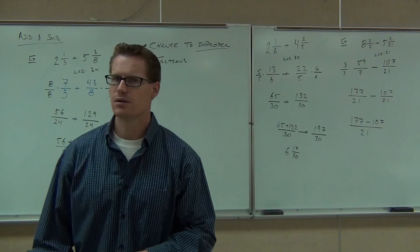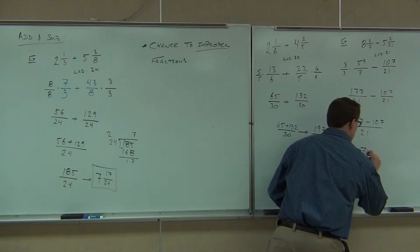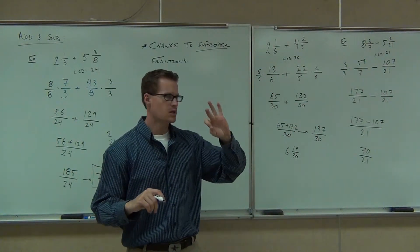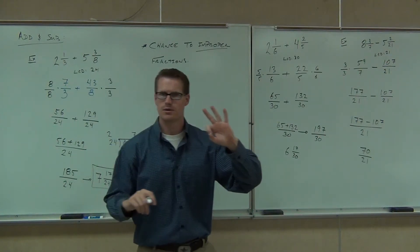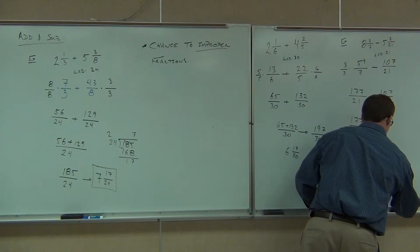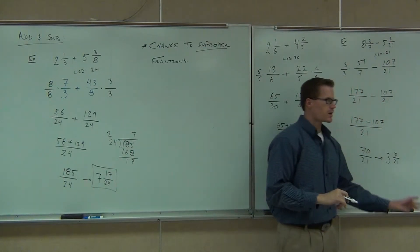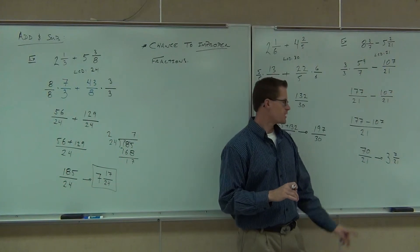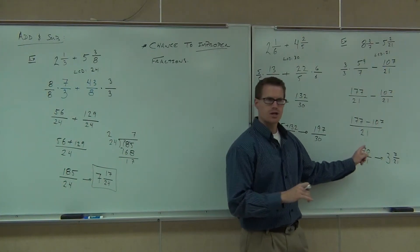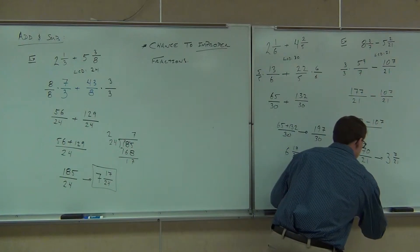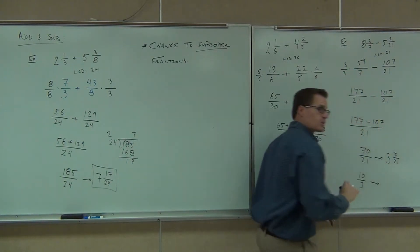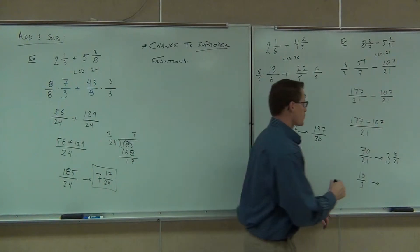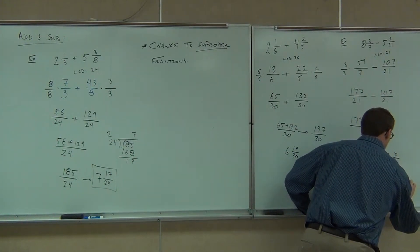What's 177 minus 107? 70. Well, that's kind of nice. We'll get 70 over 21. How many times is 21 going to go into 70 without going over? Three times. That's going to be 63, so we're going to have a remainder of 7. Actually, if you wanted to, before you even change this, do you see that you can simplify this number? If you simplify it by 7, you're going to get 10 over 3. Does that still give you 3 and a third? Yes. Either way, we'll give you 3 and a third.